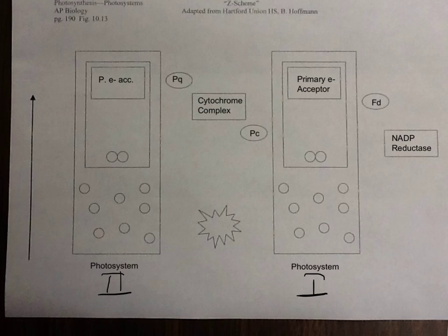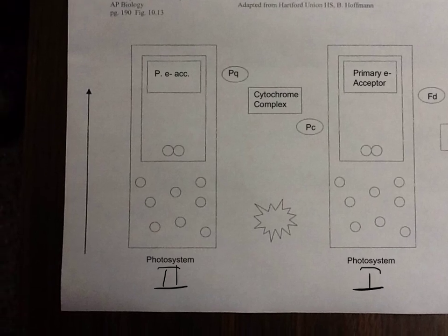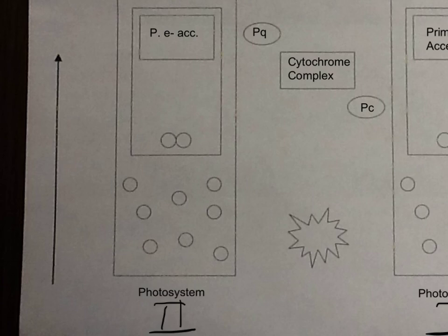This arrow over here represents that as we go up in height on this document, that represents the amount of energy that the electrons have. As we go up this page, the amount of energy that electrons have will increase. I'd like you to write on that line that this represents the energy of electrons.